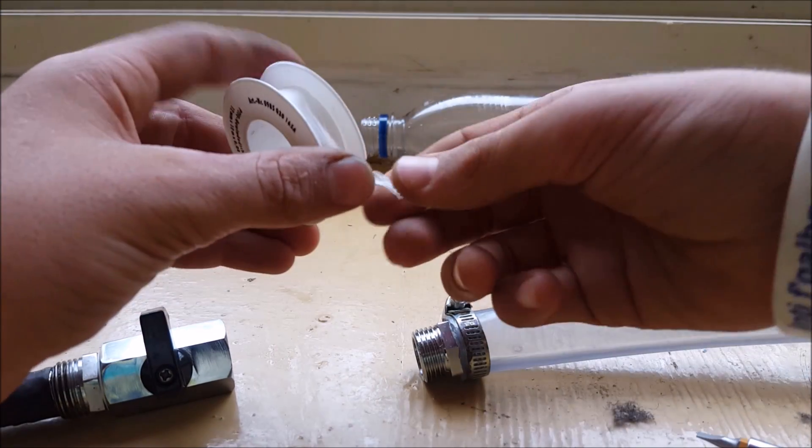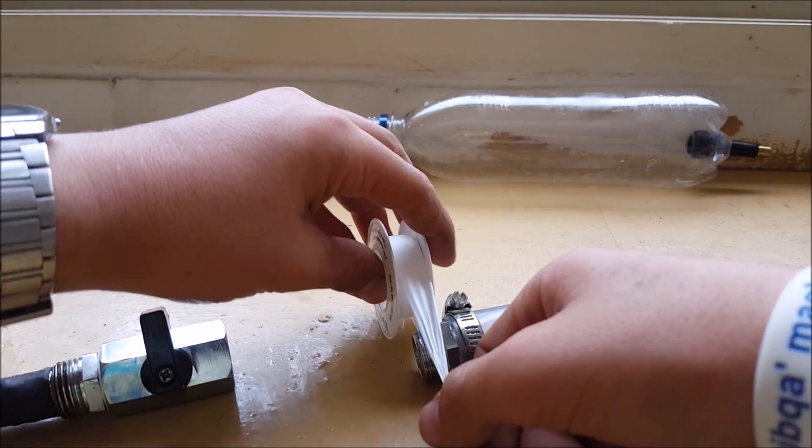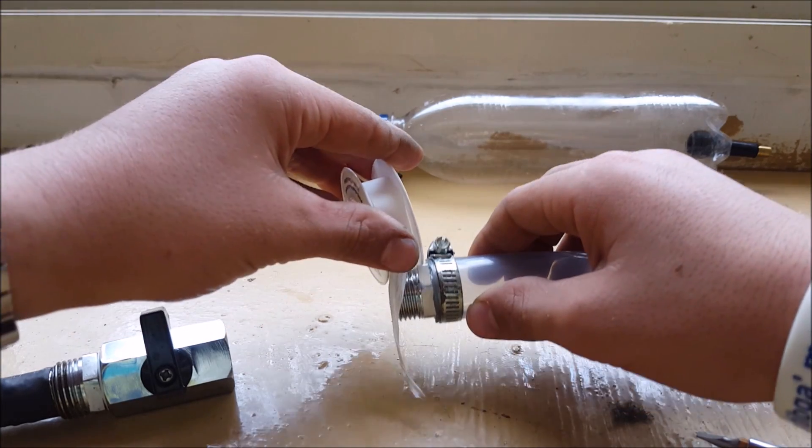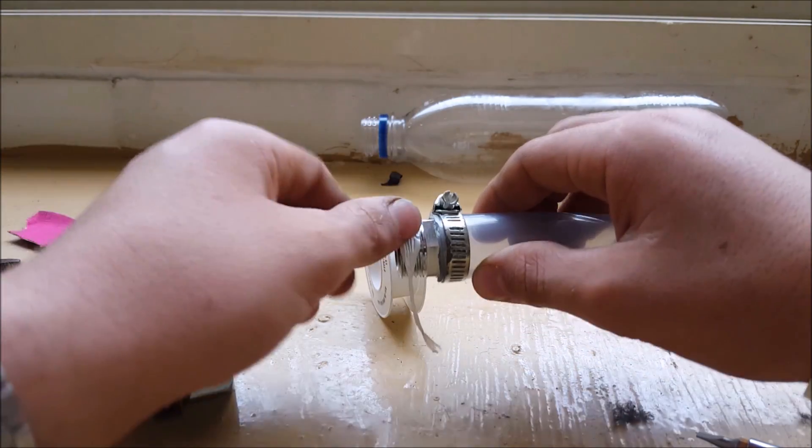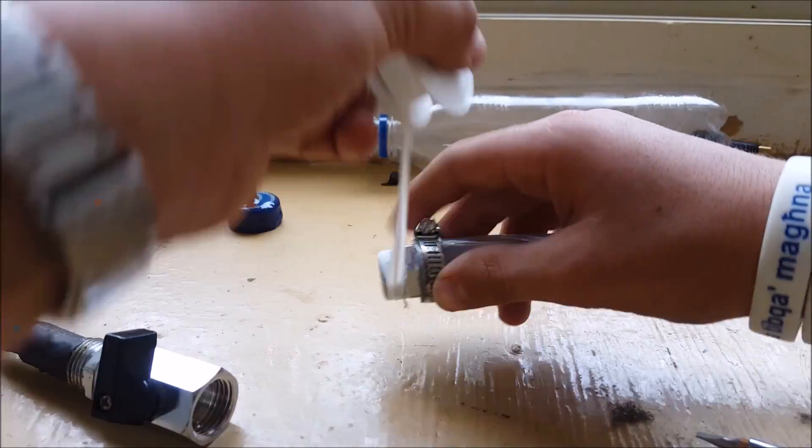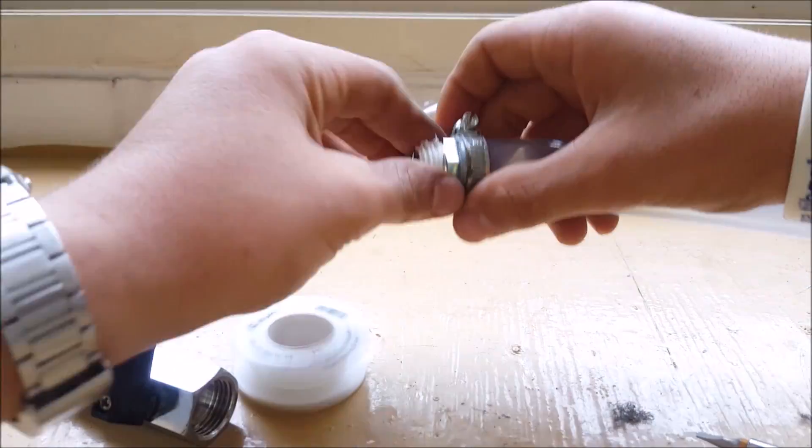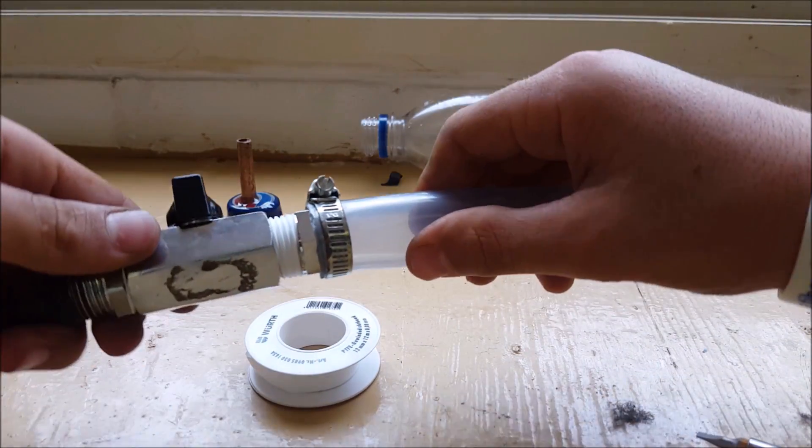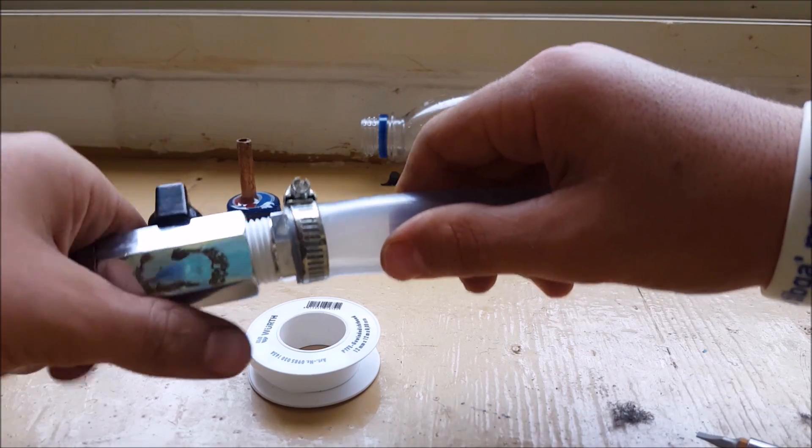After you are done with that, grab the teflon tape and put some around the pipe nipple where we are going to screw it into the valve. After you are done with that, screw it into the other side of the valve.